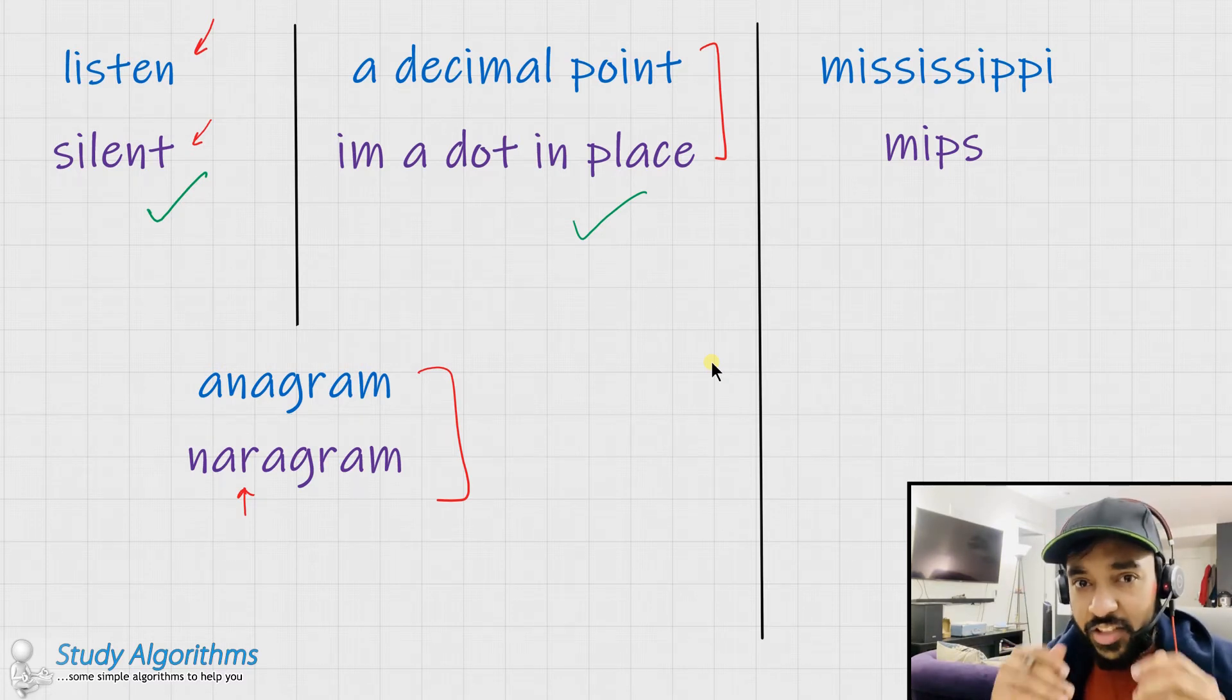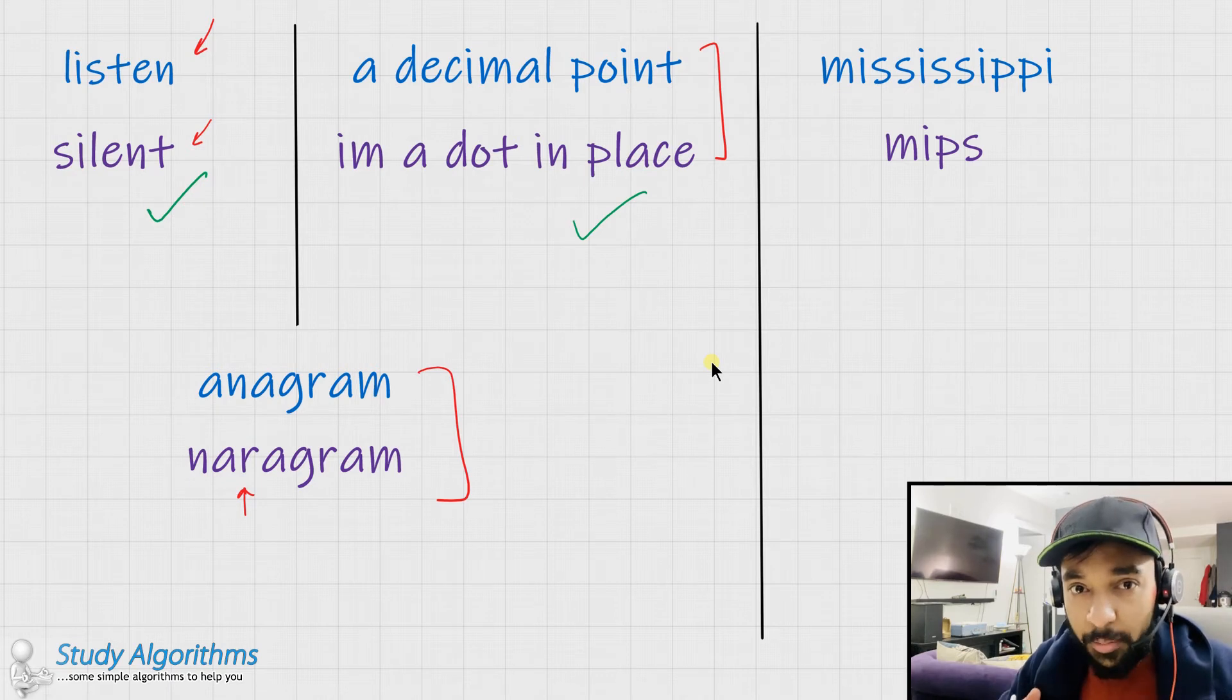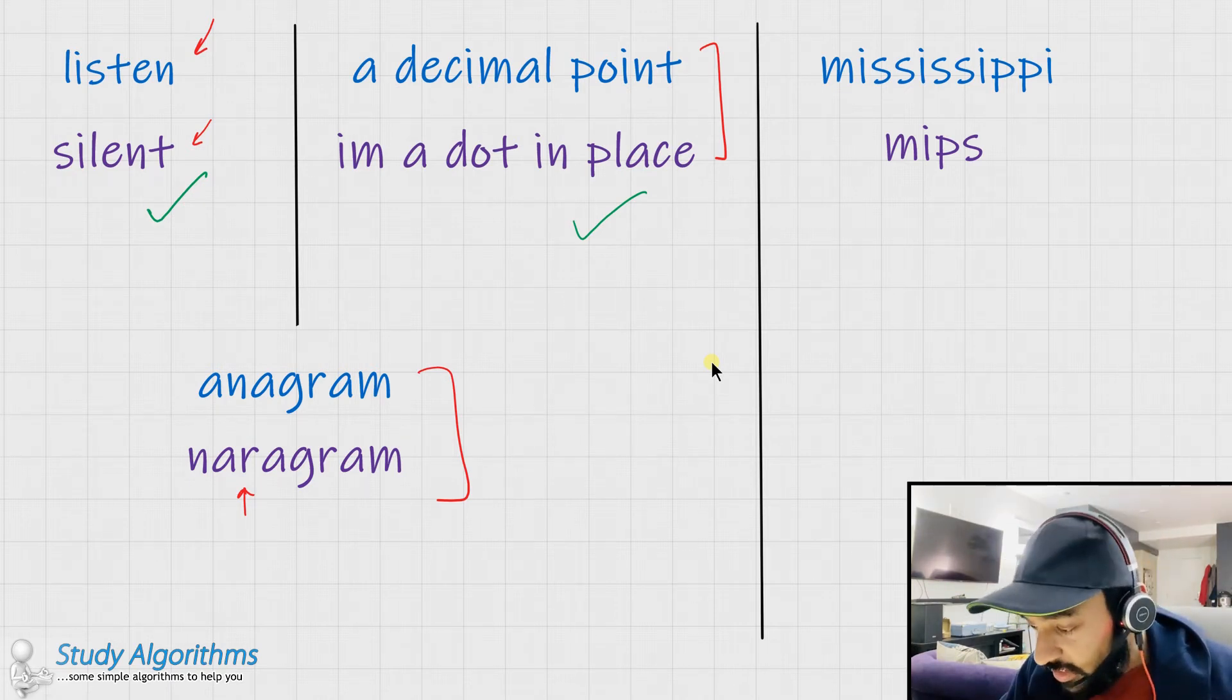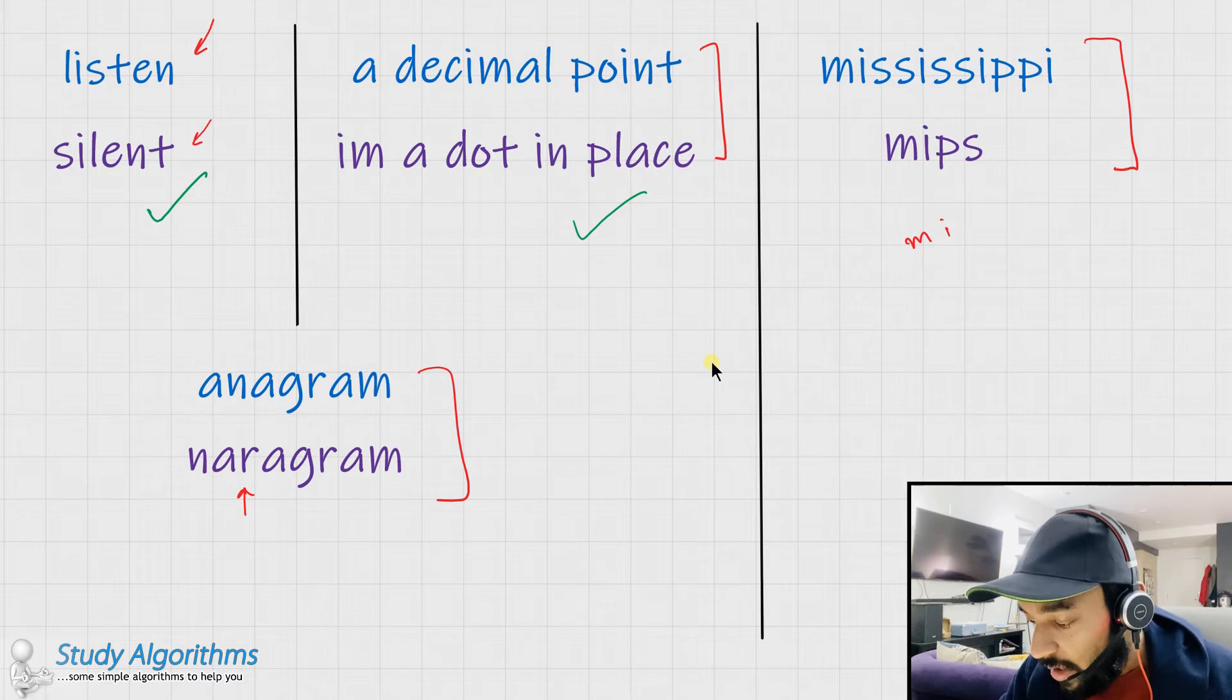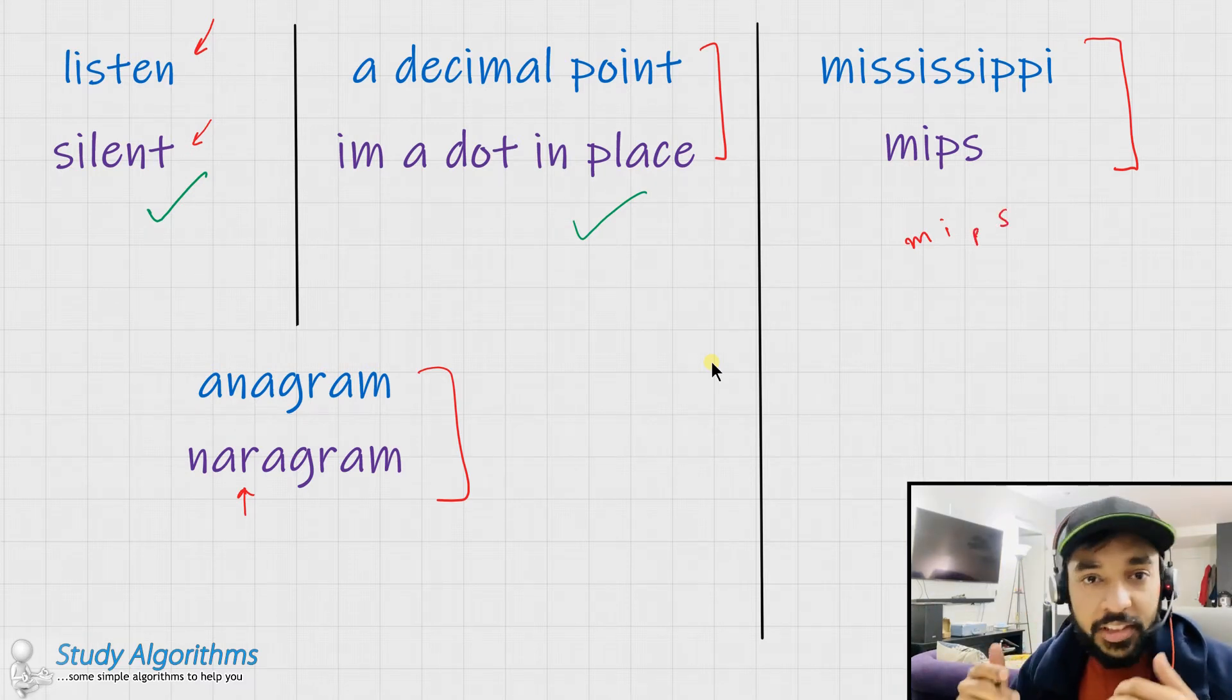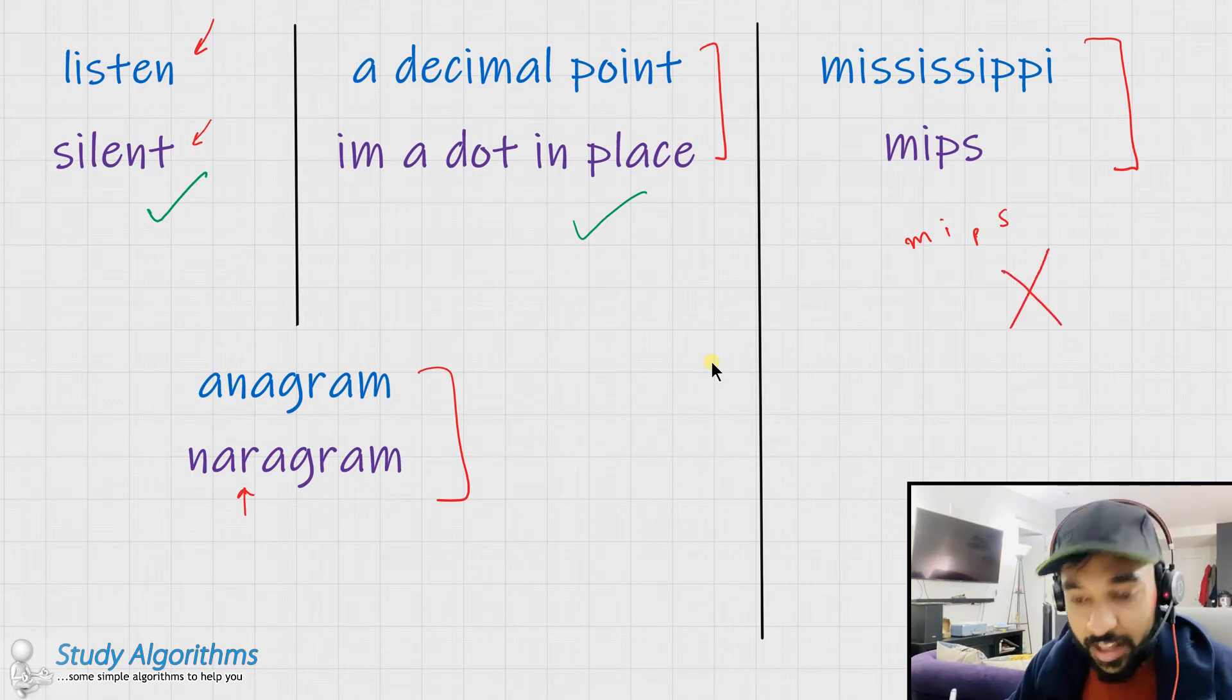Do note that just by saying that the characters of two strings or phrases are same, it won't be characterized as an anagram. Let me see the last and the final example. So both of these strings have the words M, I, P and S. But the frequency of these characters is different in both of them. And hence, this is not a valid anagram.